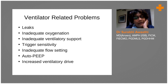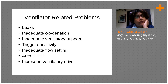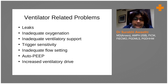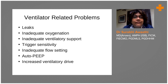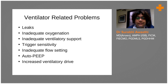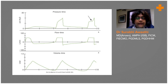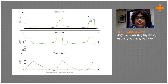Ventilator-related problems include leaks in the tubing or in the ventilator circuit, a problem in the oxygen supply or oxygenation, incorrect support settings, or improper trigger sensitivity. The patient may be getting auto-PEEP, or the patient now has an increased ventilatory drive and the ventilator is not matching with the patient's drive.